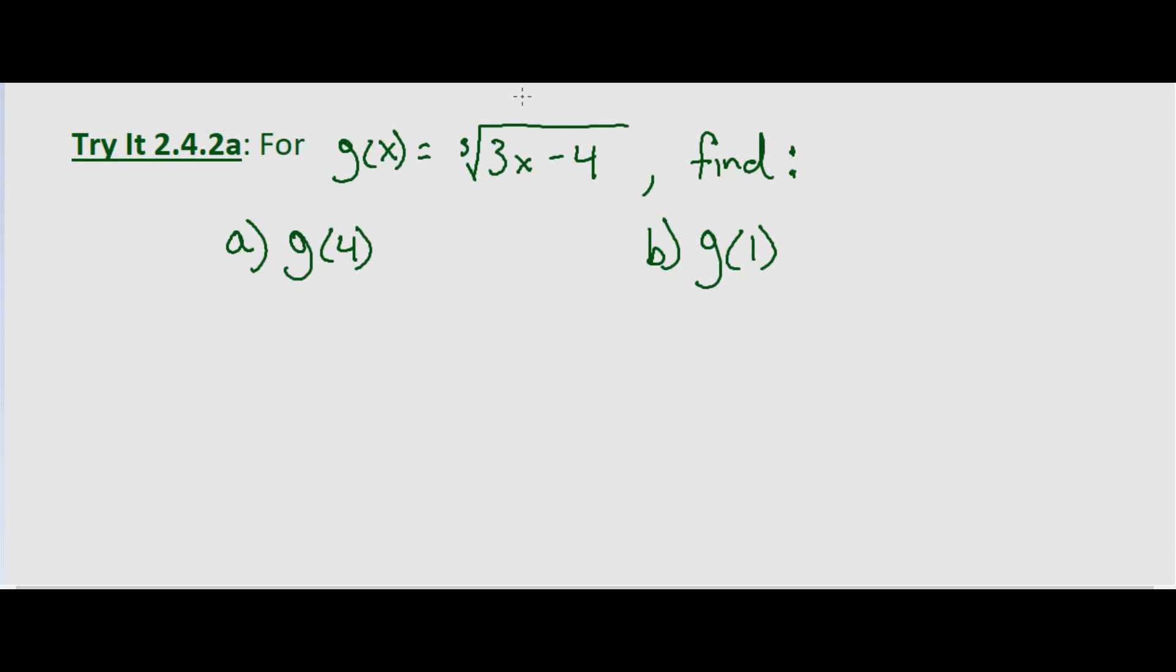We simply substitute the value for x and then simplify. So with g(x) equals the cube root of 3x minus 4, g(4) is going to be the cube root of 3 times 4 minus 4. That equals the cube root of 12 minus 4, which equals the cube root of 8, which equals 2.